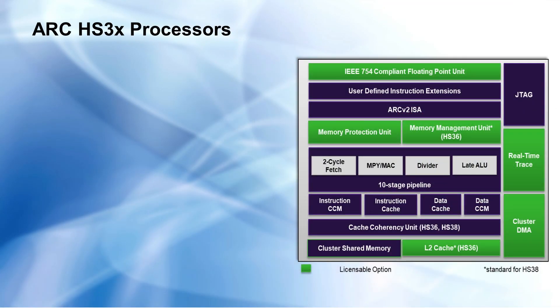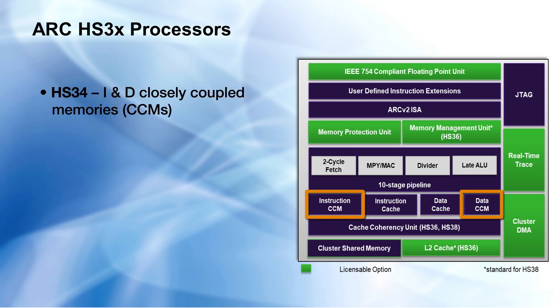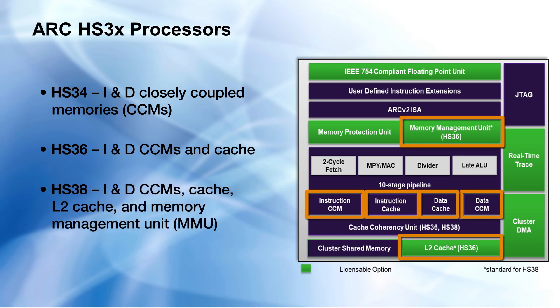The family includes the single-issue HS3X cores: the HS34, which features close-coupled memory for hard real-time applications; the HS36, which adds cache support; and the HS38, which features a full MMU and L2 cache for running high-end operating systems like Linux.